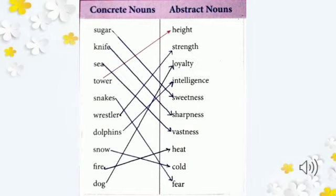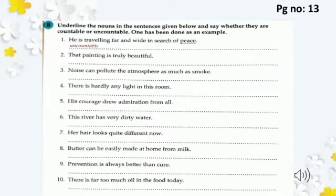Dolphins are very quick to pick things up — they have intelligence, so match dolphins with 'intelligence' (ذہانت). Snow (برف) is cold, so match snow with 'cold.' Fire (آگ) is hot and has heat we can feel, so match fire with 'heat.' Dog is loyal, so match dog with 'loyalty' (وفاداری). This exercise should also be completed in your supplements.